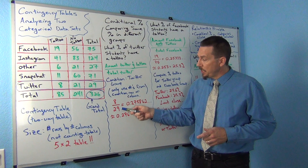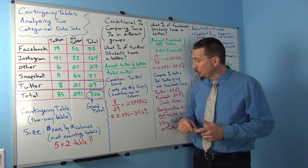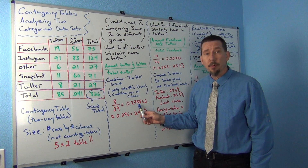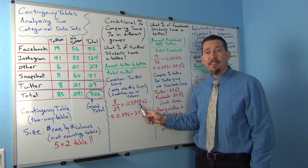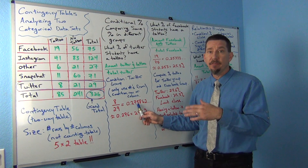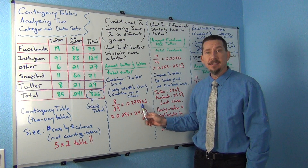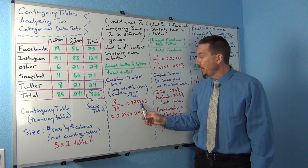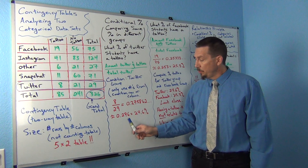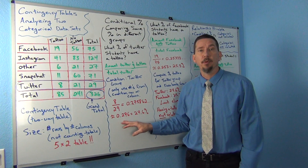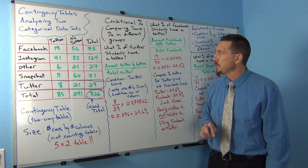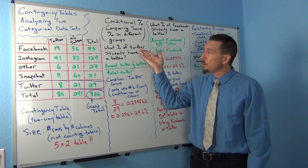So 8 divided by 29 gives 0.275862, and rounding to the third decimal place — since we're working with a proportion — I look to the right of the 5, it's an 8, so I round up. That gives us 0.276. Multiplying by 100, we get 27.6%. So 27.6% of the Twitter students have a tattoo.